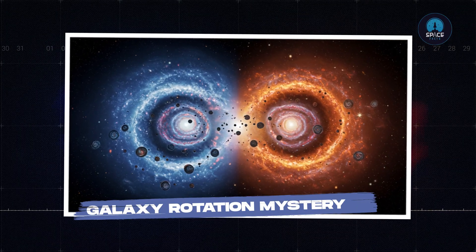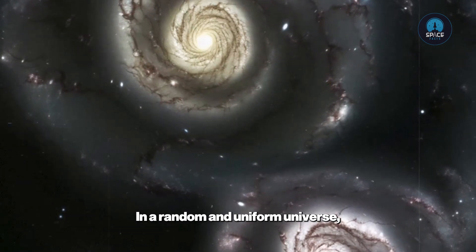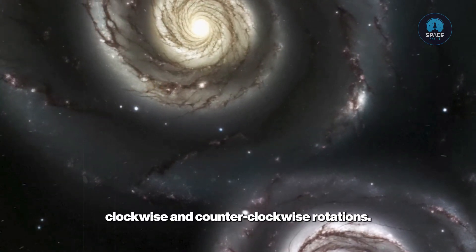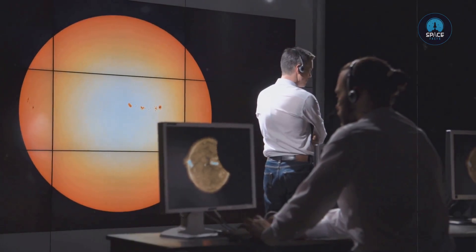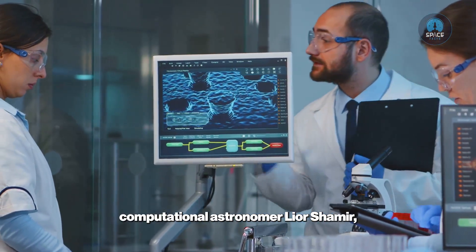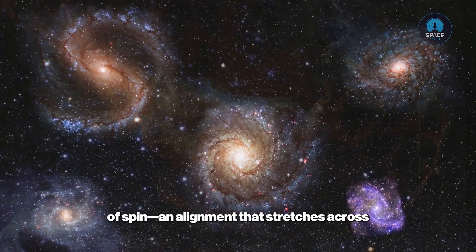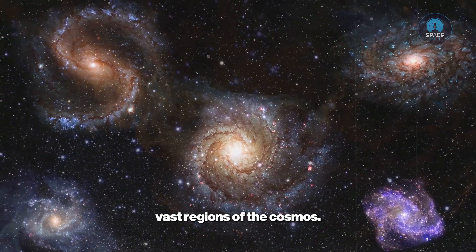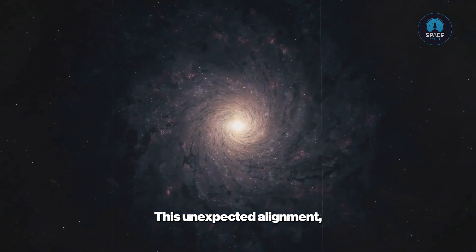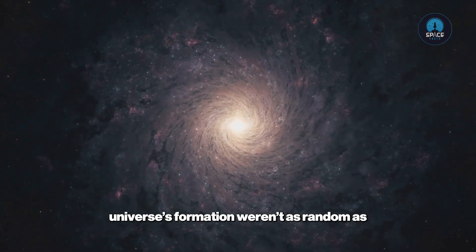Galaxy rotation mystery: Now let's talk about another cosmic puzzle that might just point to the same conclusion. In a random and uniform universe, you'd expect galaxies to be spinning in all sorts of directions, with a roughly 50-50 split between clockwise and counterclockwise rotations. But that's actually probably not what we see. A study from 2020, which analyzed over 200,000 spiral galaxies and was led by computational astronomer Lior Shamir, found a significant imbalance. There seems to be a preferred direction of spin and alignment that stretches across vast regions of the cosmos. The odds of this asymmetry happening purely by chance are less than 1 in a billion. This unexpected alignment, seen across billions of light years, suggests that the processes during the universe's formation weren't as random as we once thought.